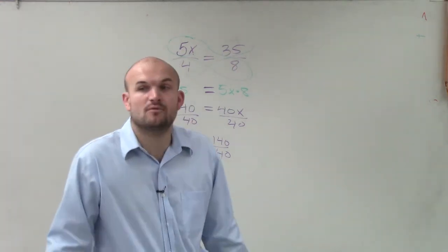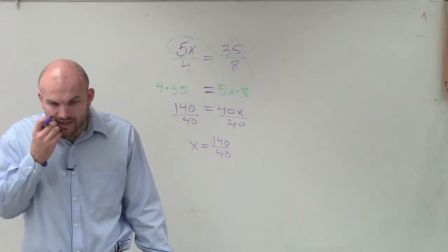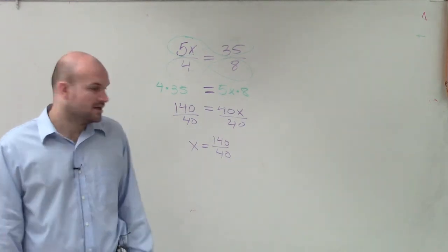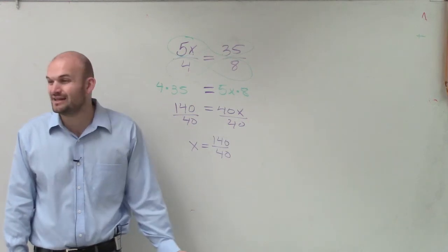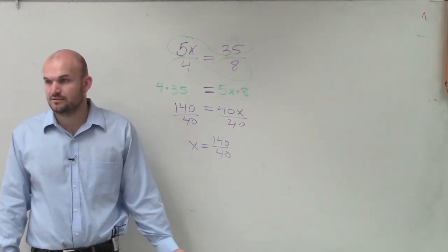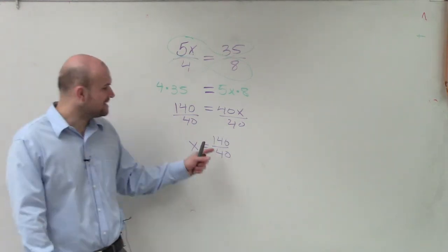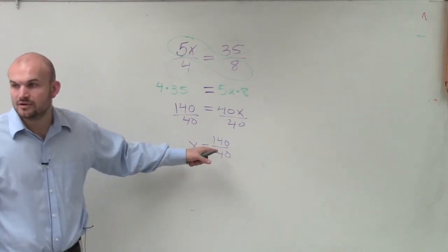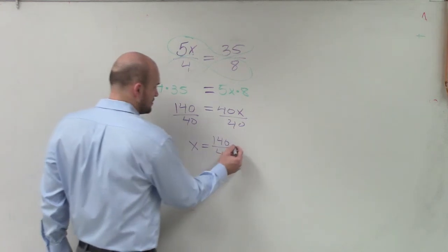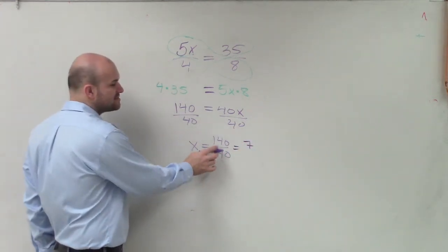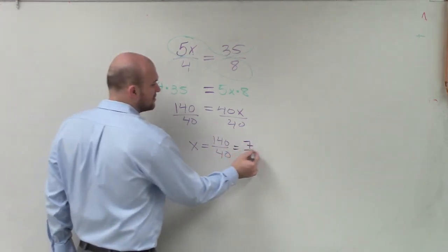But I can maybe say, well, why don't I try simplifying them, right? Can I divide the top and bottom by 2? Yes. Can I divide the top and bottom by 20? Yes, right? So how many times does 20 go into 14? 7. How many times does 20 go into 40? 2.